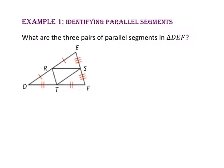In example one, we will identify parallel segments. What are the three pairs of parallel segments in triangle DEF? Let's take a look at triangle DEF. Point R is the midpoint of segment DE, point T is the midpoint of segment DF, and point S is the midpoint of segment EF.